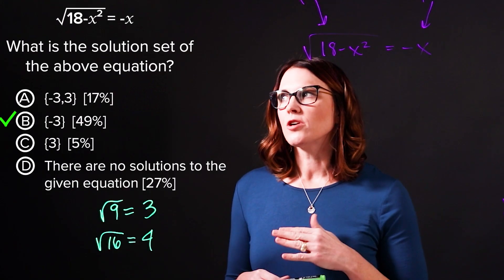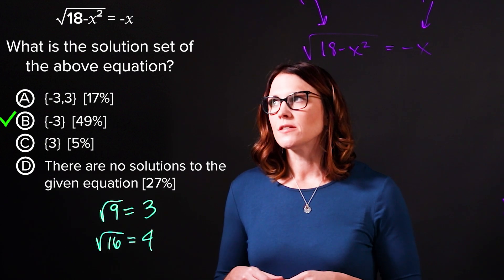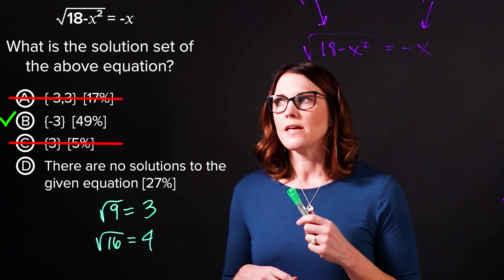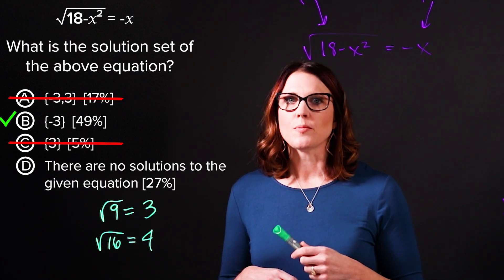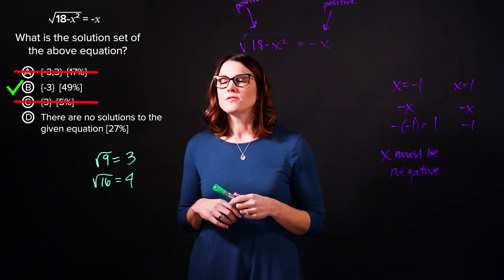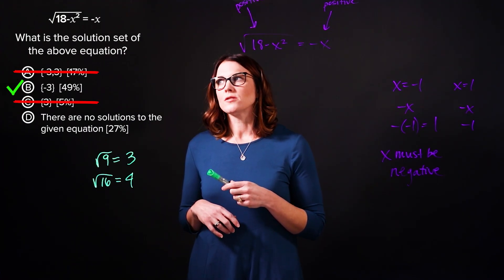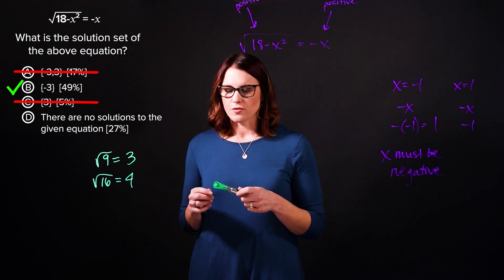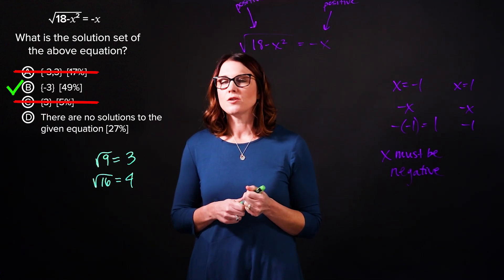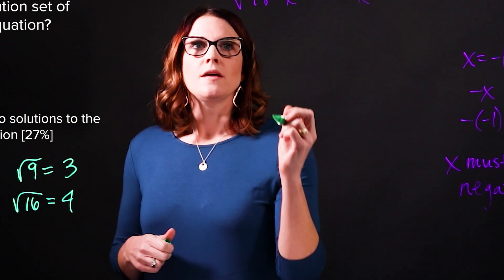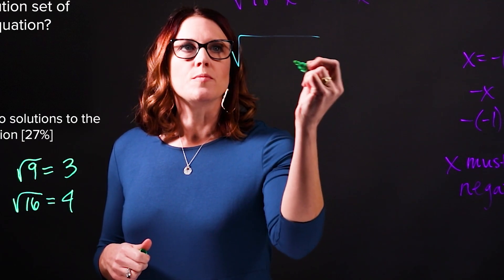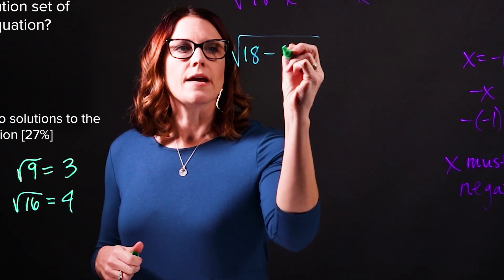Now that we know that, we can look back at our answer choices, and we can eliminate choices a and c because they contain a positive value. That leaves only one possible value for our solution, and that's negative 3. So let's plug that in and see if it results in a true statement. So I'm going to replace x on both sides of the equation with negative 3.